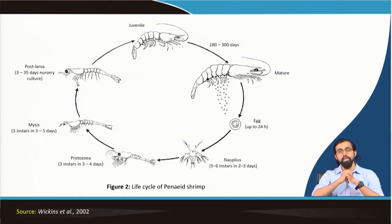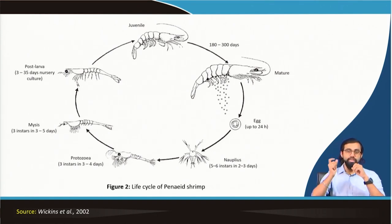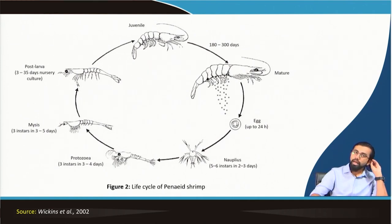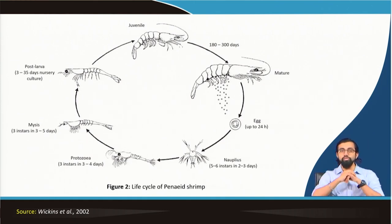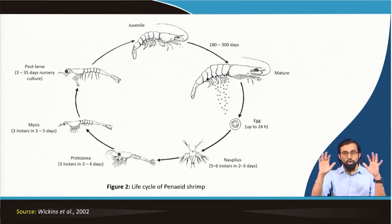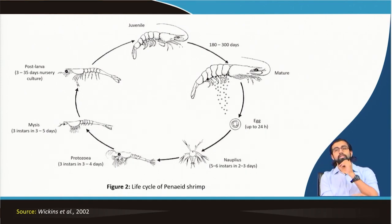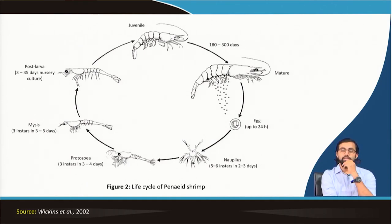The full life cycle of penaeid shrimp starts from the egg, which hatches within about 24 hours into the nauplius stage with 5 to 6 instars over 2 to 3 days. Then comes the protozoea stage with 3 instars over 3 to 4 days, followed by mysis, then post-larva, and then the juvenile stage. From juvenile to final maturation requires around 180 to 300 days. In total, from pre-preparation management through execution to the final harvest, the entire process takes around 350 to 360 days — approximately one year.